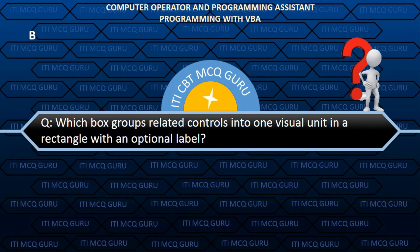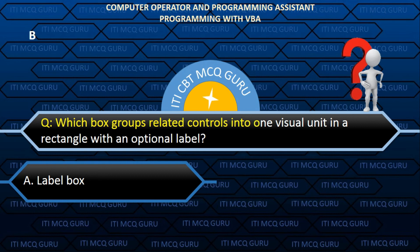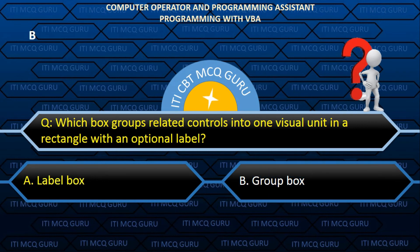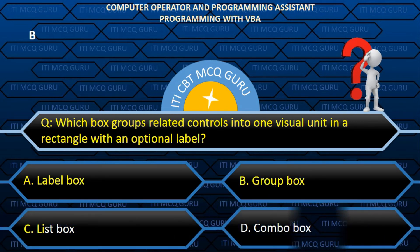Which box groups related controls into one visual unit in a rectangle with an optional label? Answer: B. Grouped box.